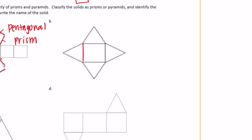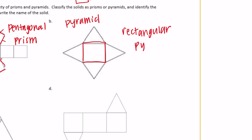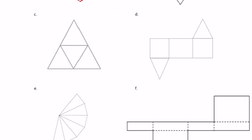The next one only has one base, meaning it is a pyramid, and the shape of the base is a rectangle — so this is a rectangular pyramid. The one after that looks like this would be the base and the other three triangles fold up. There's only one base, making it a pyramid, and since the base is a triangle, it's called a triangular pyramid.